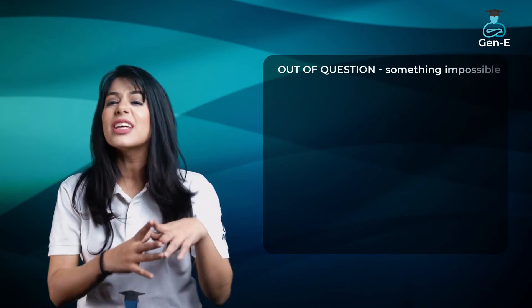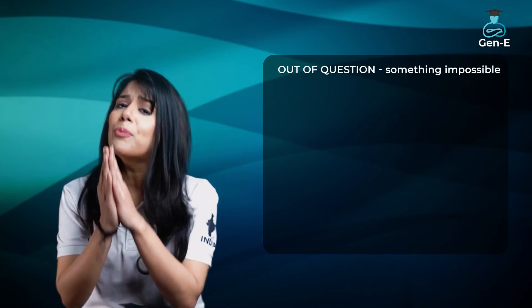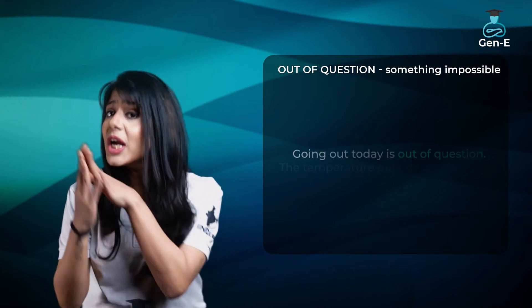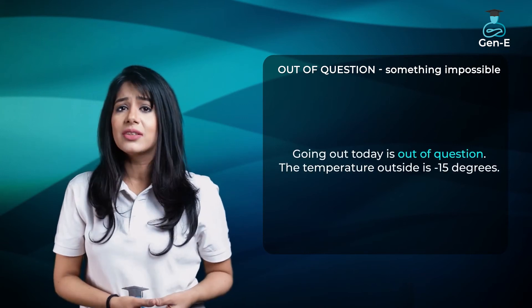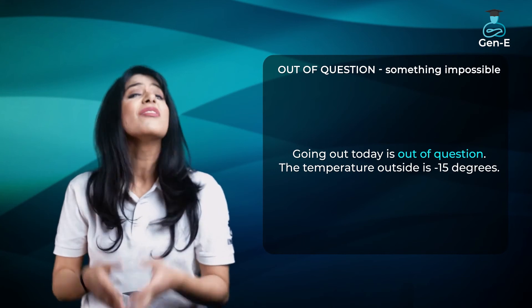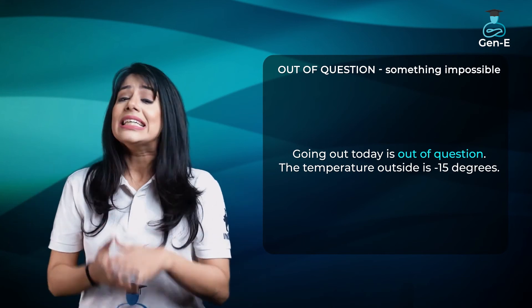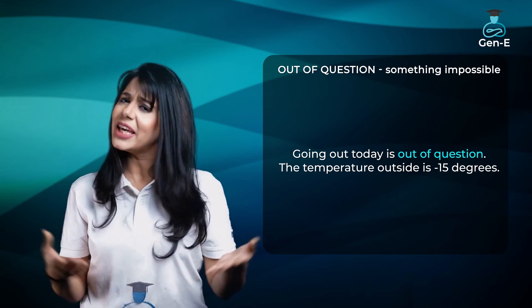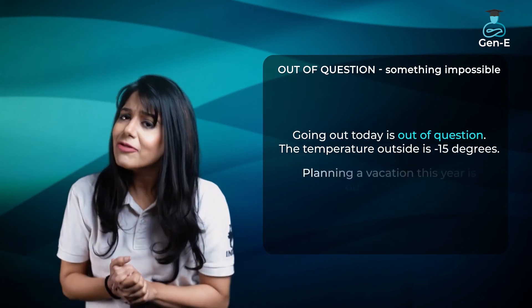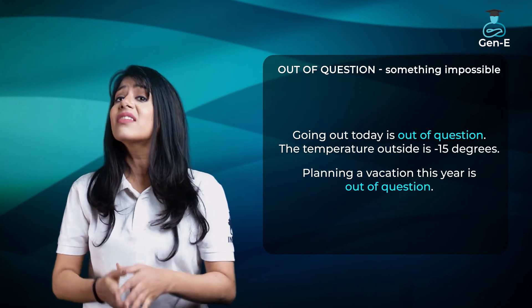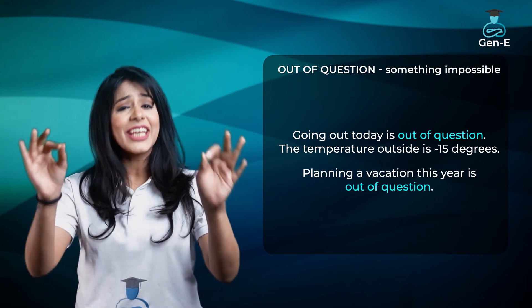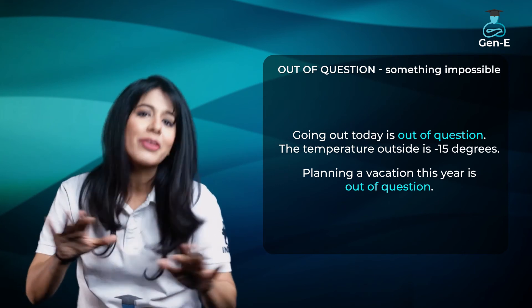The next phrase is 'out of question' — jiska matlab hai jab kuch impossible ho. Jaise, 'Going out today is out of question, the temperature outside is minus 15 degrees' — iska matlab hai aaj bahar jaana impossible hai. Ek aur dekho: 'Planning a vacation this year is out of question' — matlab is saal vacation plan karna bilkul possible nahi hai.